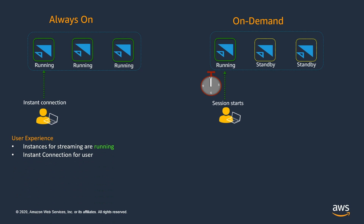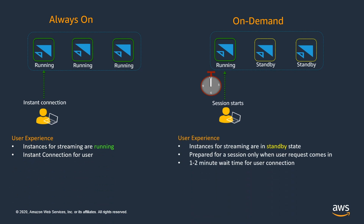To summarize the user experience: for always-on fleet, since the streaming instances are already up and running, the user gets an instant connection experience. Whereas for on-demand fleet, the standby instances will be prepared for the session only when the user request comes in. This will result in a connection wait time of one to two minutes to start the actual session.